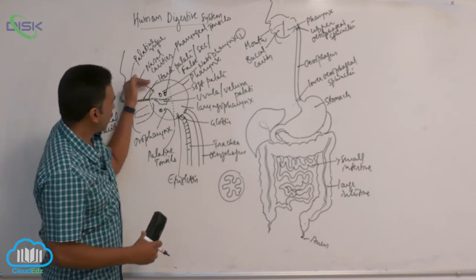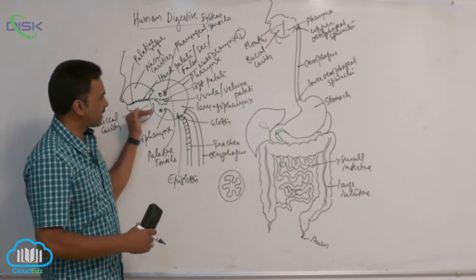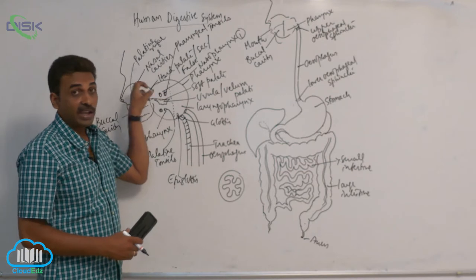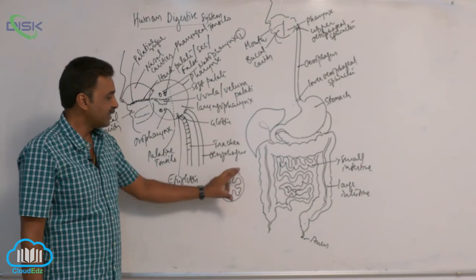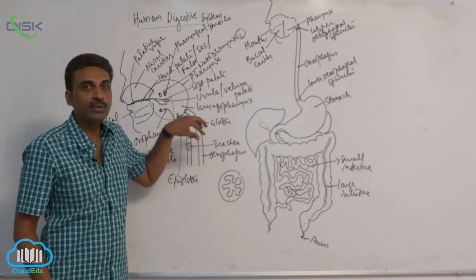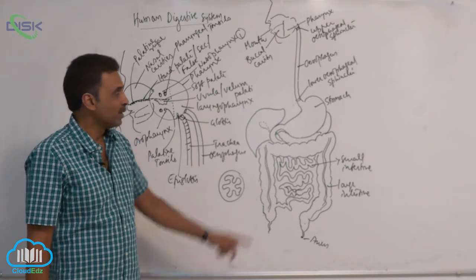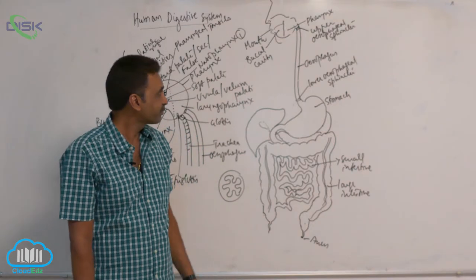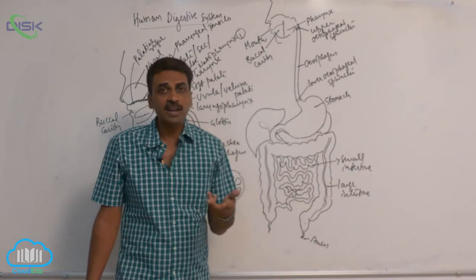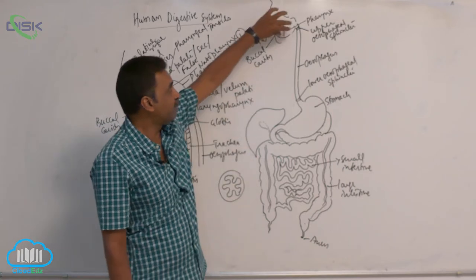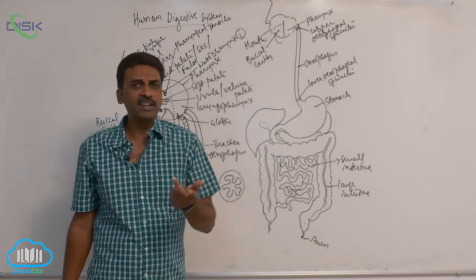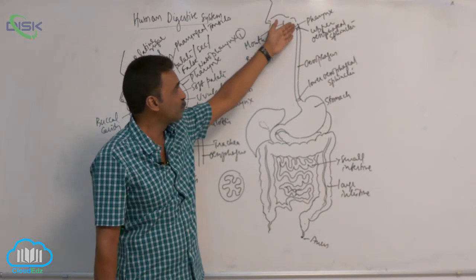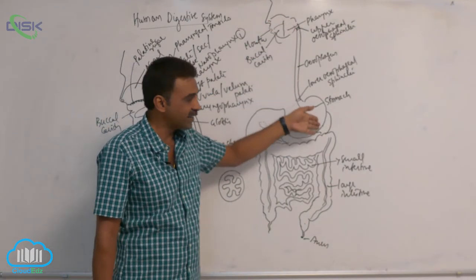Air can come from the same direction as food, but the rugae prevent air from passing through while giving way to food. The esophagus does not allow air to pass through. Food passes through the esophagus, which is about 25 centimeters long, in roughly 10 seconds by wave-like contractions called peristalsis, and then enters the stomach.